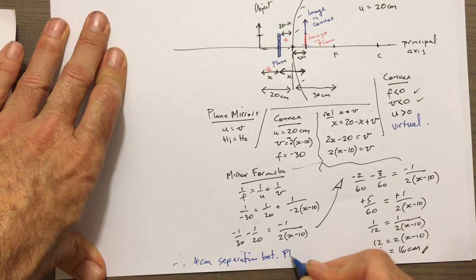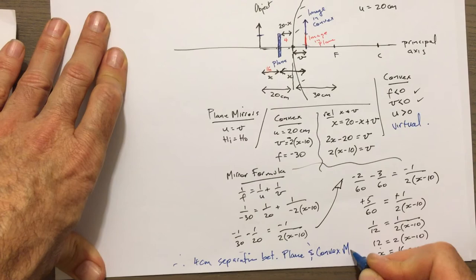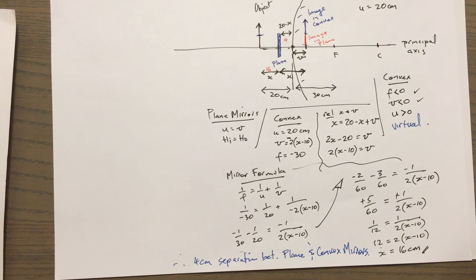Let me just check that — yes, that is the right answer. The separation between the plane mirror and the convex mirror is 4 centimetres. Thank you very much, thanks for hanging in there. See you guys, cheers.